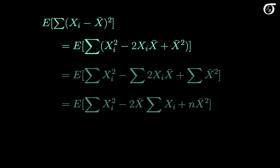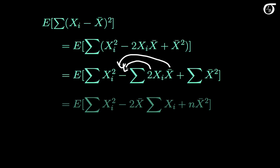We need to find the expectation of the sum of x sub i minus x bar squared. Squaring this out, we get the sum of x sub i squared minus 2 times x sub i times x bar plus x bar squared. Carrying the summation through, the important thing to notice is that x bar is a constant with respect to this summation — it is the same for all i. So we can take the 2 and x bar out front, and x bar squared summed n times becomes n times x bar squared.